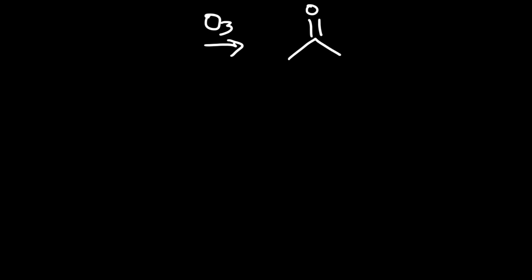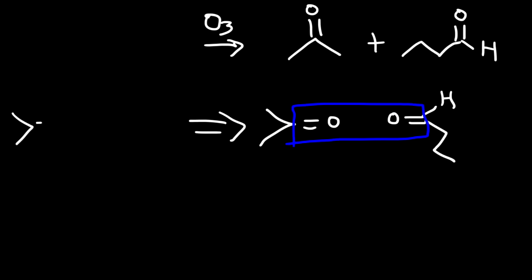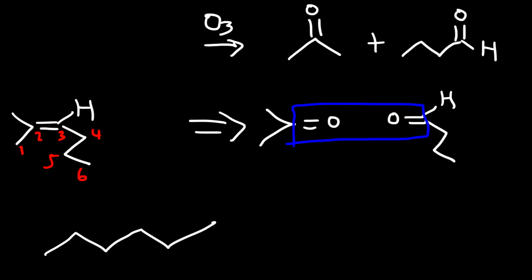Now what if you're given the products of the reaction? Say we have a ketone and an aldehyde — how can we determine the original alkene? What I like to do is draw the carbonyl groups facing each other and then simply connect them. You want to get rid of the two oxygen atoms and connect the two molecules by means of an alkene. Redrawing gives us a 6-carbon chain with a methyl on carbon 2, and the alkene between carbons 2 and 3 — so we have 2-methyl-2-hexene as our starting material.